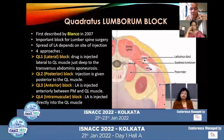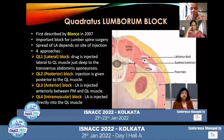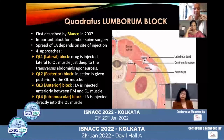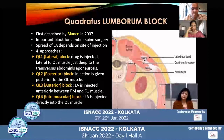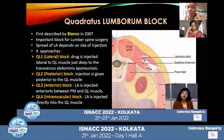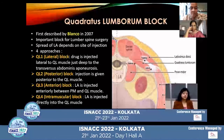In the lateral block, the drug is injected lateral to the quadratus lumborum muscle, just deep to the transversus abdominis aponeurosis. While in the posterior block, the injection is given posterior to the quadratus lumborum muscle. In the anterior block, the local anesthetic is injected anteriorly between the psoas major and the quadratus lumborum muscle. In the intramuscular block, the local anesthetic is directly injected into the quadratus lumborum muscle.